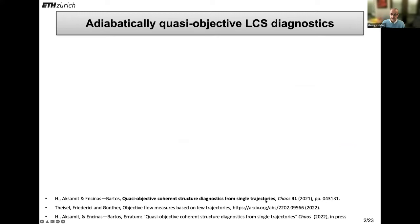Very quickly, this is the paper 'Quasi-Objective Coherent Structure Diagnostics from Single Trajectories.' It came out in Chaos last year. You can find examples there. And we derived such adiabatically quasi-objective LCS diagnostics. Once again, these in qualifying frames approximate true bona fide objective diagnostics. However, when you check framing indifference, you're only allowed to make slowly varying coordinate changes.